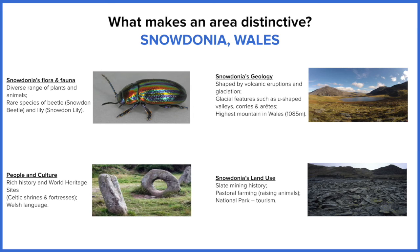Looking at how humans have used that geology: because of the volcanic activity in the area, there has been production of slate which has been mined. Because Snowdonia is an upland area it's not very good for growing crops, but it's brilliant for pastoral farming — raising animals, predominantly sheep. And because it's a distinctive landscape it draws in a lot of tourists, so the national park benefits from tourism.